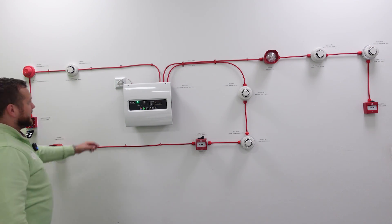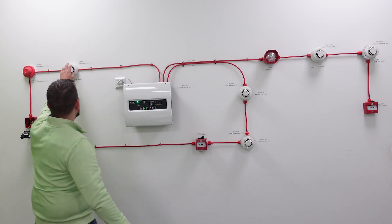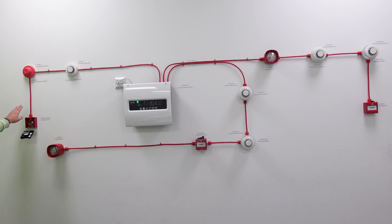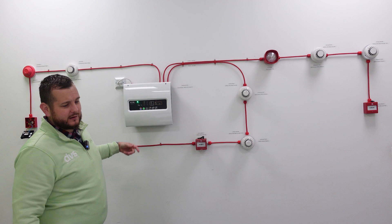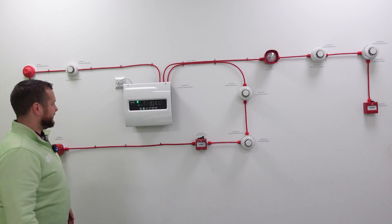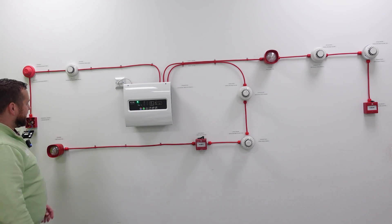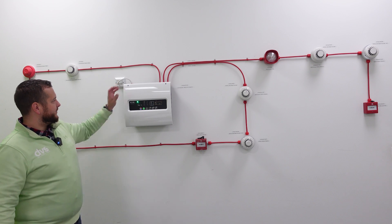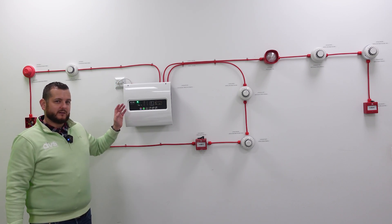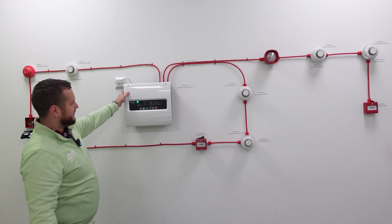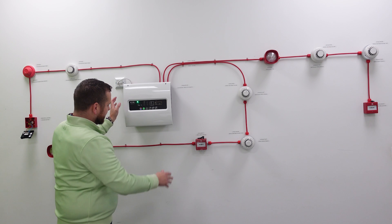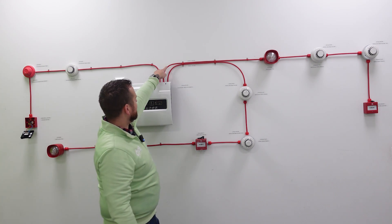Traditionally on this side of the wall here is a more conventional or conventional style. We'd have the detection circuits and manual call points on one zone effectively, and the sounders would be on a separate zone. Eaton make this lovely panel. It can be surface mounted or it can be flush mounted. We've surface mounted ours because I like to show the cable, it's quite visual actually.